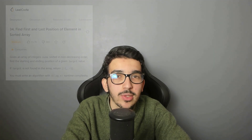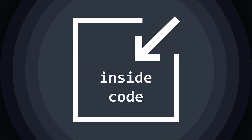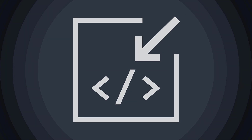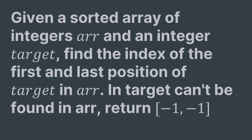Welcome to this lecture, where we will solve the first and last index problem. We are given a sorted array of integers r and an integer target, and we are asked to find the index of the first and last position of target in r. If target can't be found in r, return minus one, minus one.